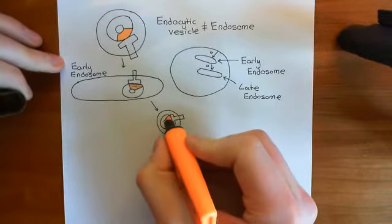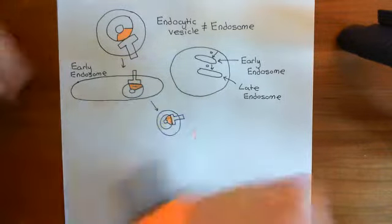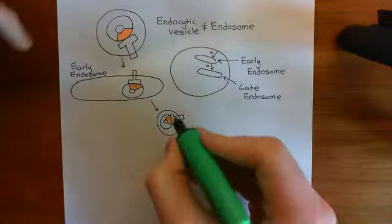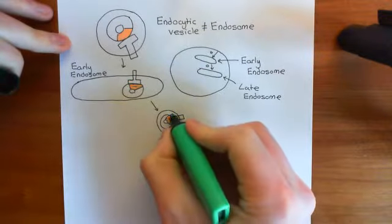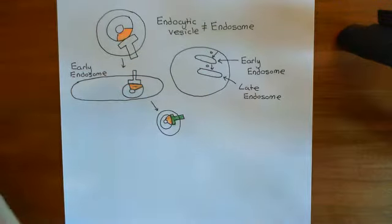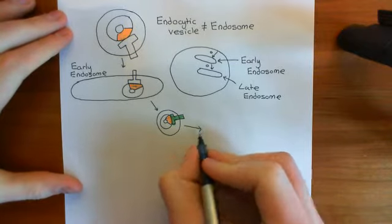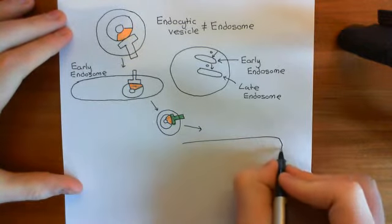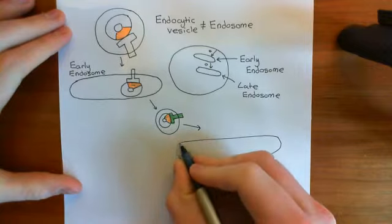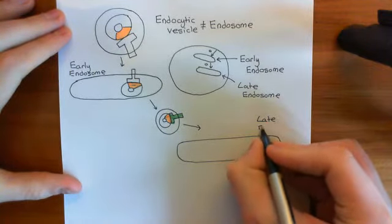In orange here we have the apolipoprotein B100, and I'll colour the LDL receptor in green. So here's the LDL receptor. This is then going to take its cargo to the late endosome, which is another one of these membrane-bound organelles.